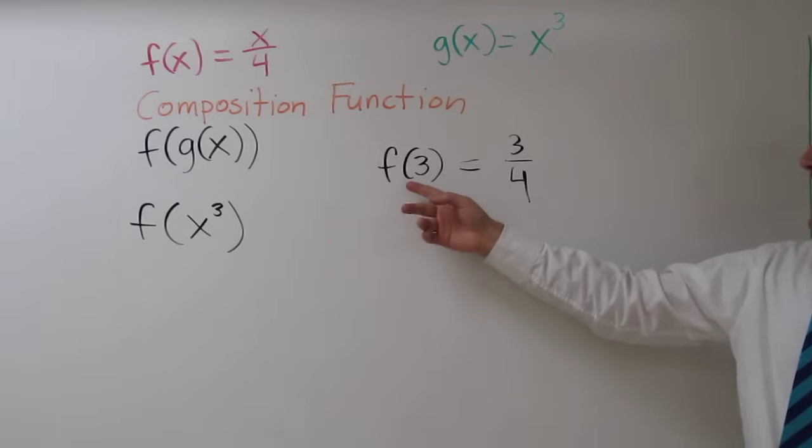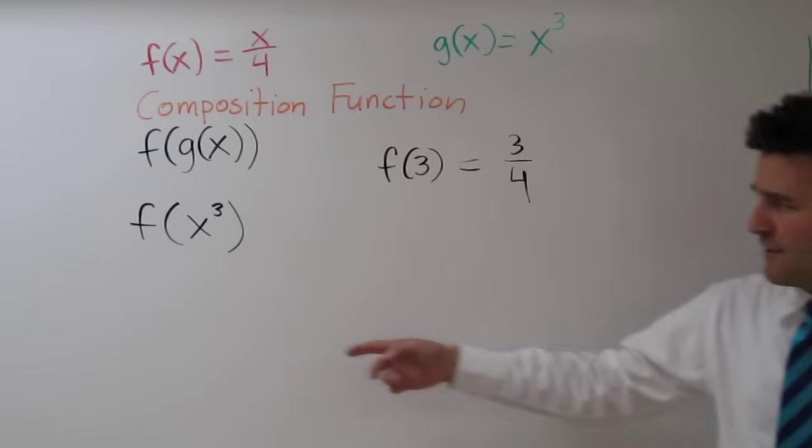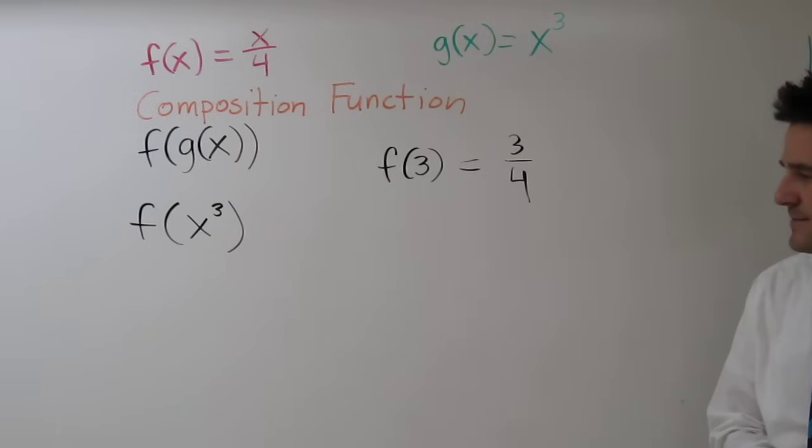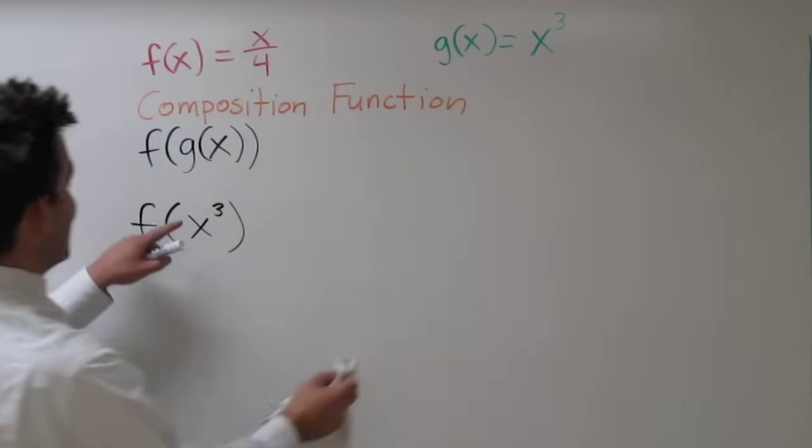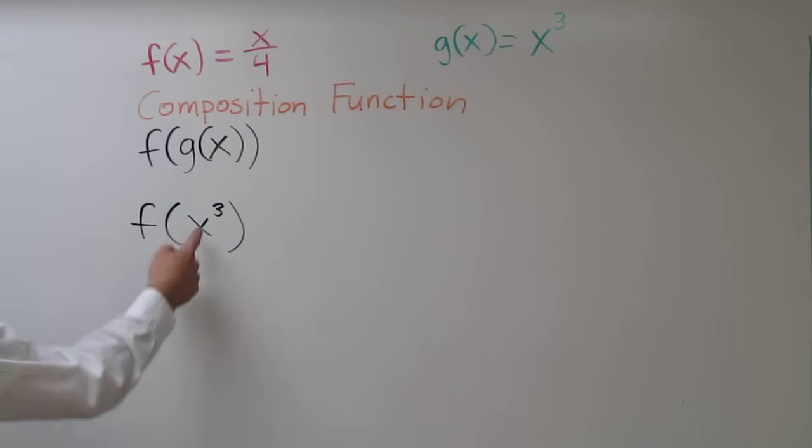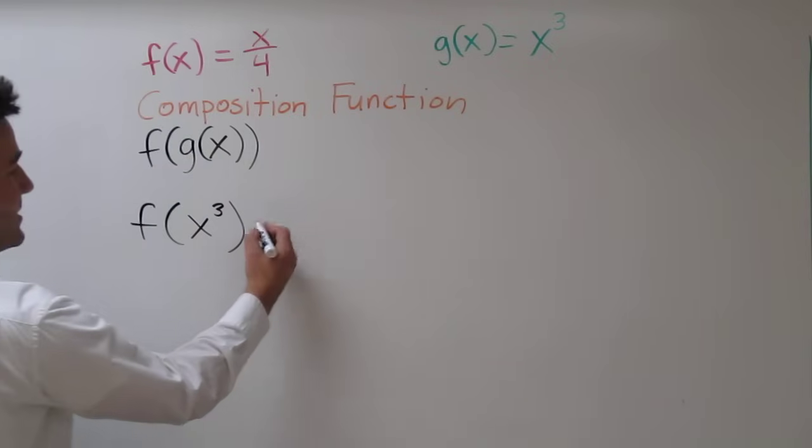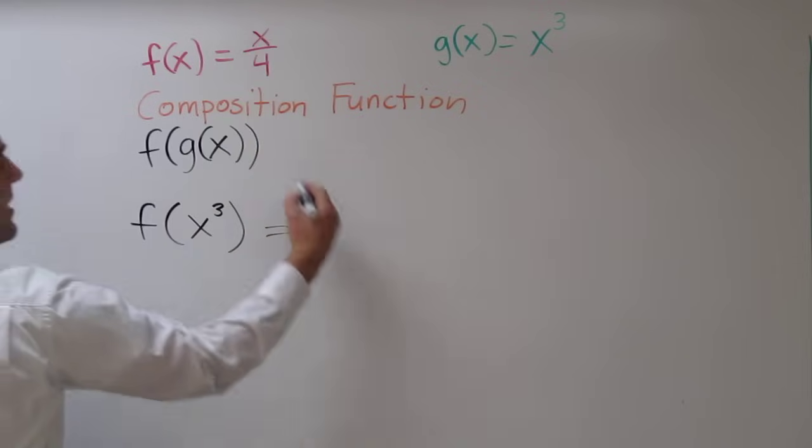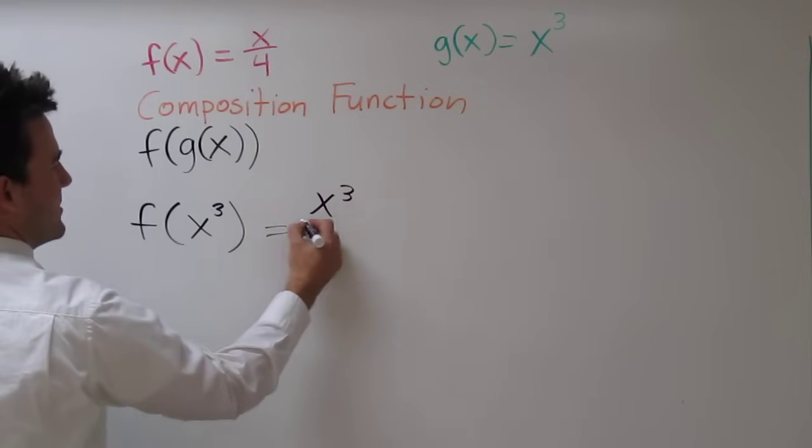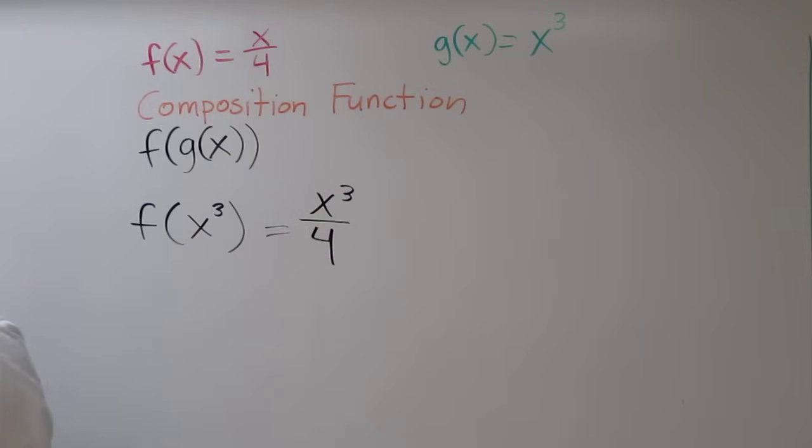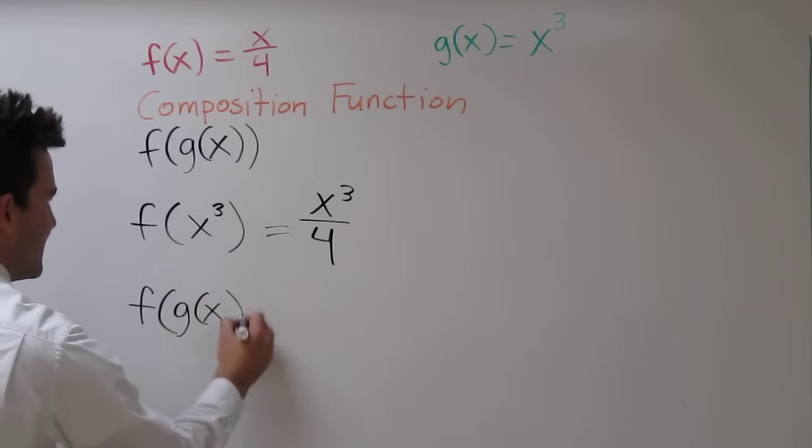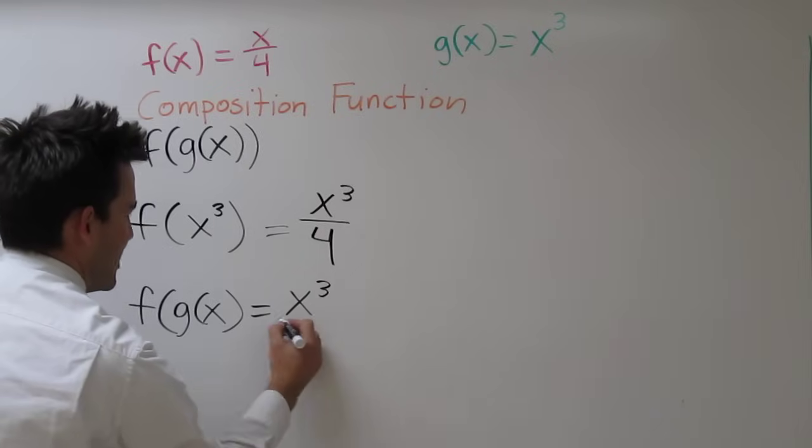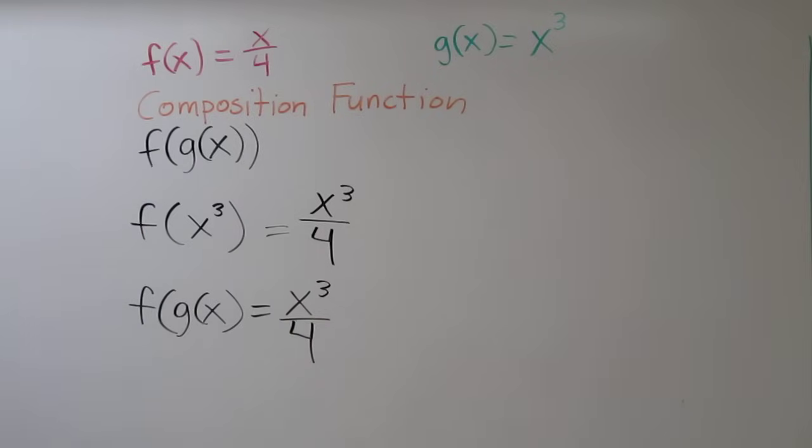But unfortunately, we don't have f of 3. We have f of x cubed. But we're going to do pretty much the same thing. Instead of replacing x with a 3, we're going to replace it with an x cubed. So we have x cubed over 4. So now we're finished. f of g of x is x cubed over 4.